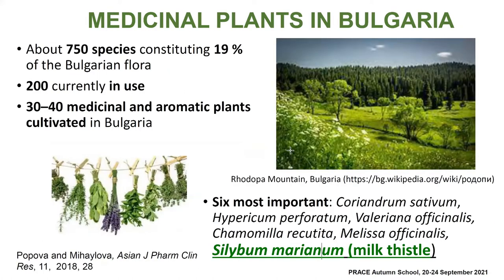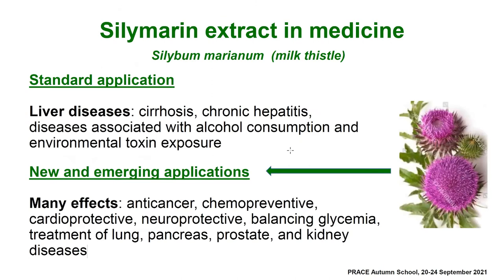The next motivation is the fact that Bulgaria is rich in medicinal plants — about 750 species, 200 of them currently in use, and 30 to 40 medicinal and aromatic plants are cultivated. Among those cultivated is the plant we are interested in: Silibum marianum, known in folk medicine as the milk thistle.